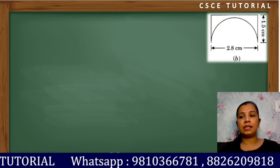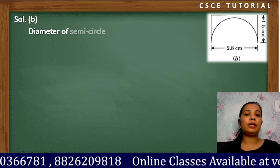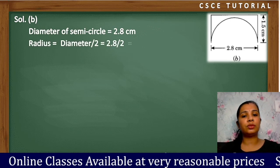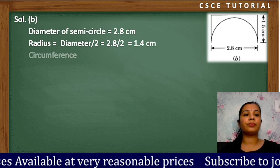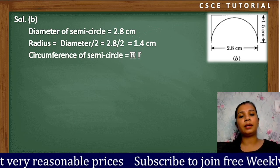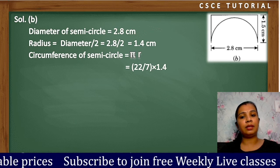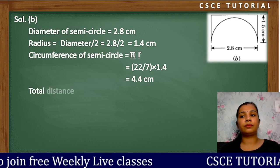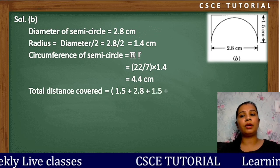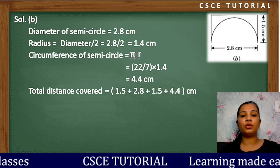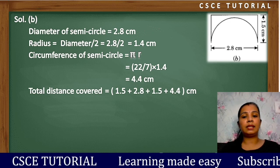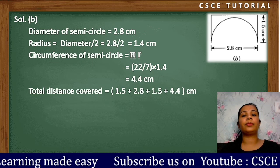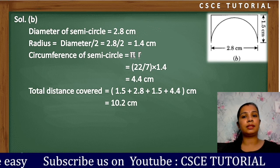For Figure B: diameter of semicircle = 2.8, radius = 1.4 cm. Circumference of the semicircle = πr = (22/7) × 1.4 = 4.4 cm. Total distance covered = 1.5 + 2.8 + 1.5 + circumference of semicircle = 10.2 cm.